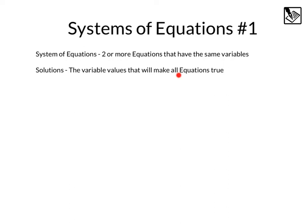Mr. Zonker here and this is Systems of Equations Part 1, Infinity War. Systems of Equations — this is two or more equations that have the same variables, and these are powerful because now we can learn to solve equations that have more than one variable, like we haven't been able to really do before.